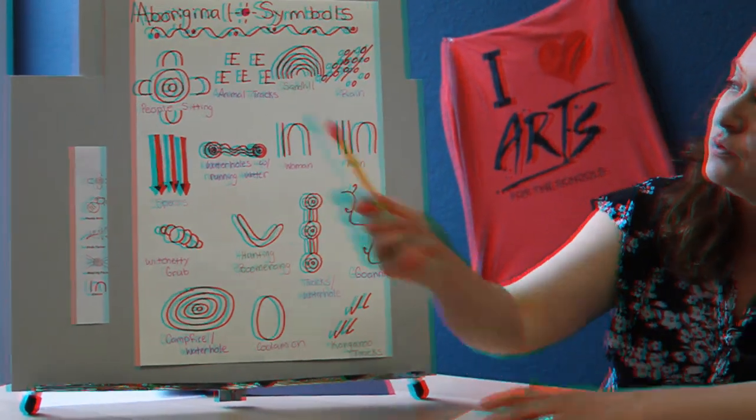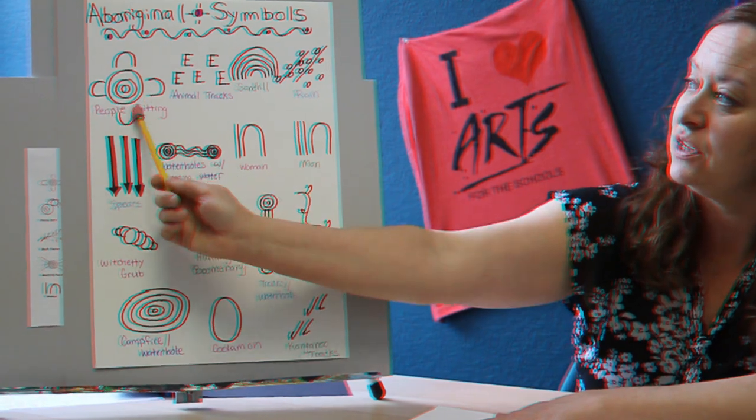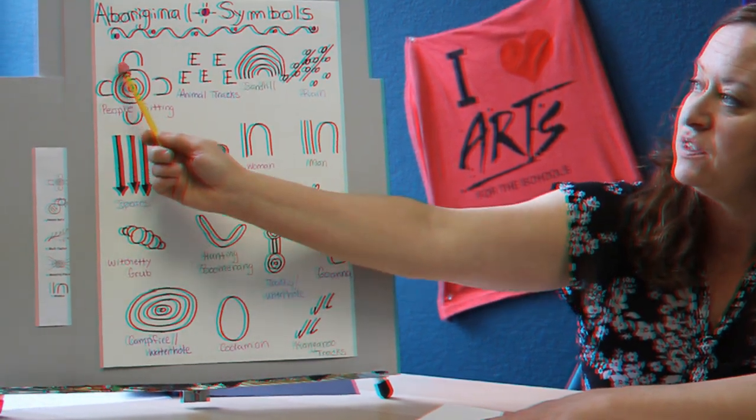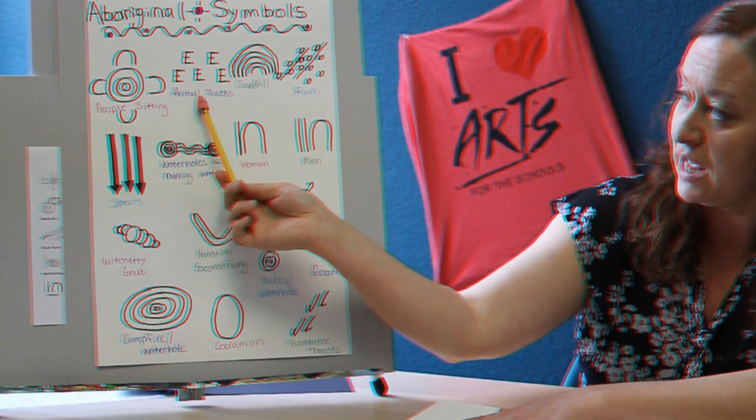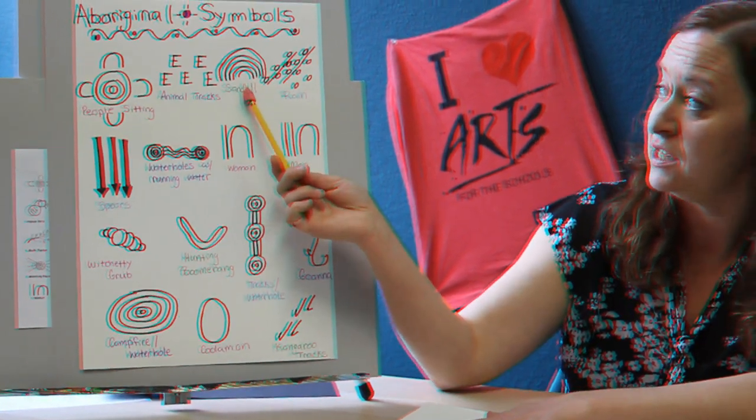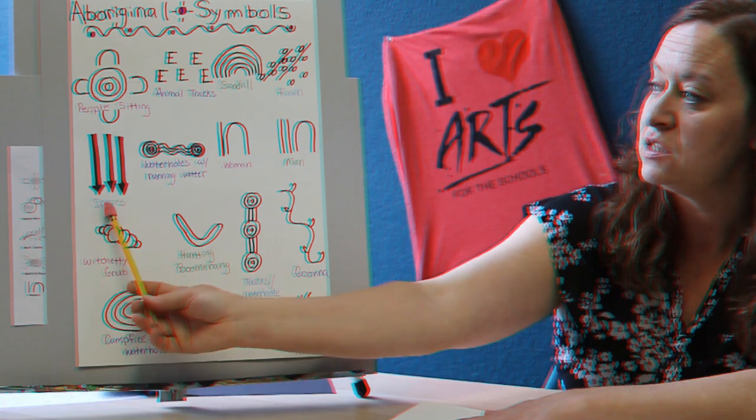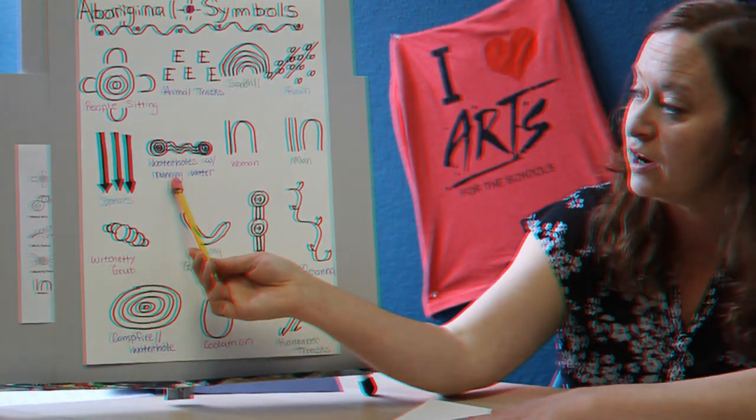Some of the symbols that are used in the artwork across the board are drawn here on this chart. So we have people sitting, which is a circular form with some half circles around. We have some animal tracks, a sandhill, rain, spears, water holes with running water.